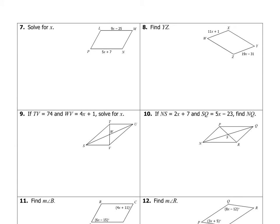I'm not gonna do too much of this part with algebra. You guys are really proficient with it by now. So I'm just gonna do one example here. Let's do number ten. Number ten says if NS is 2x plus 7 and SQ is 5x minus 23, and we're asked to find NQ.